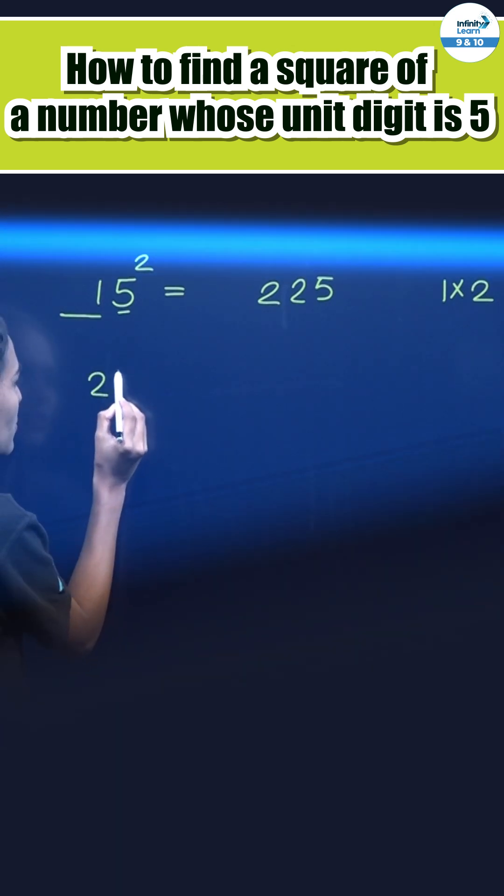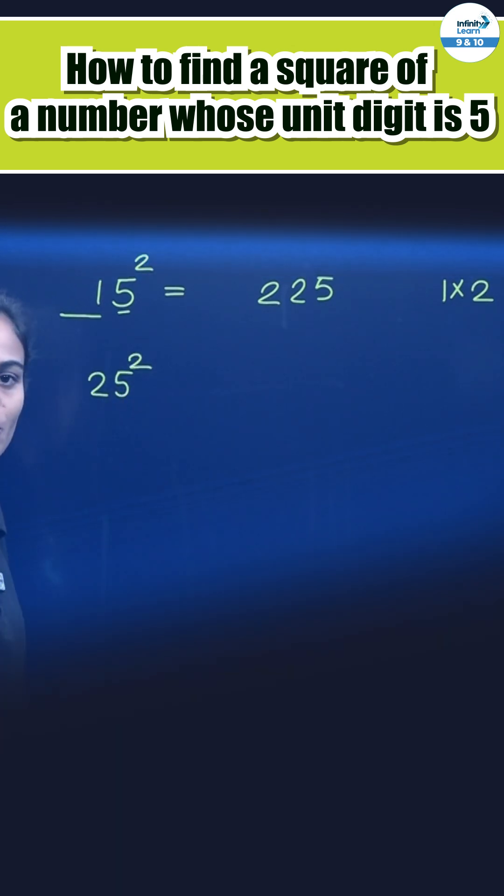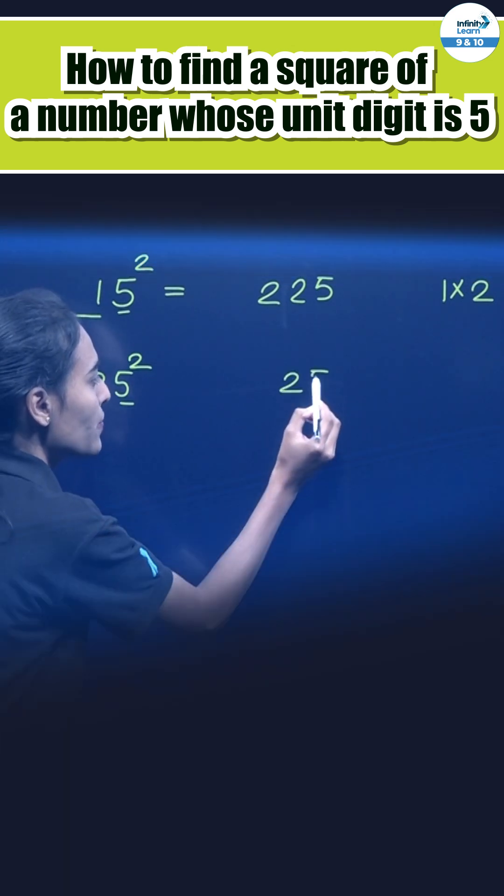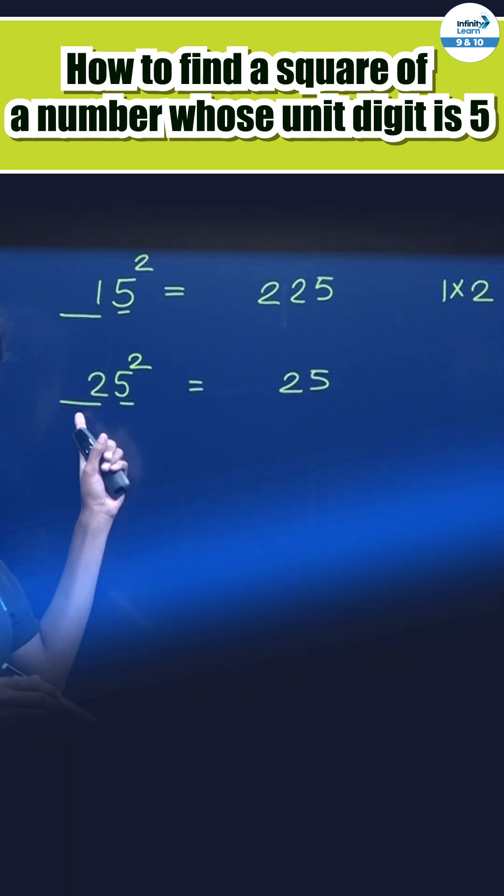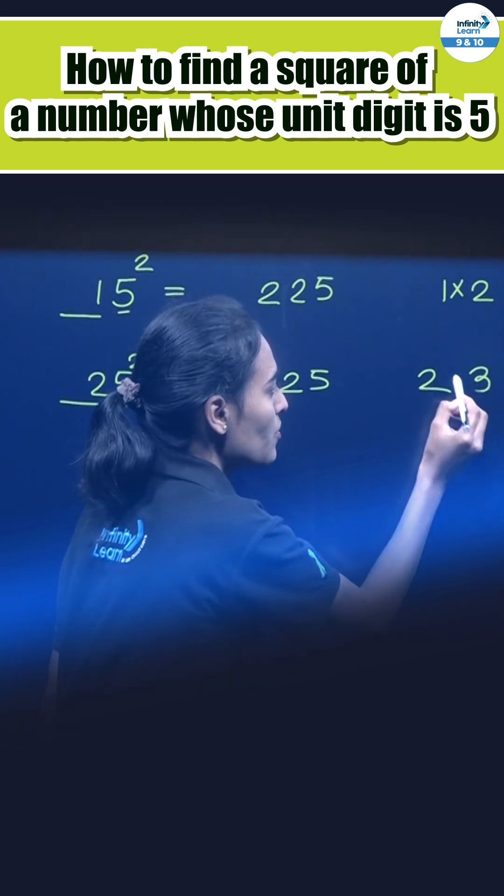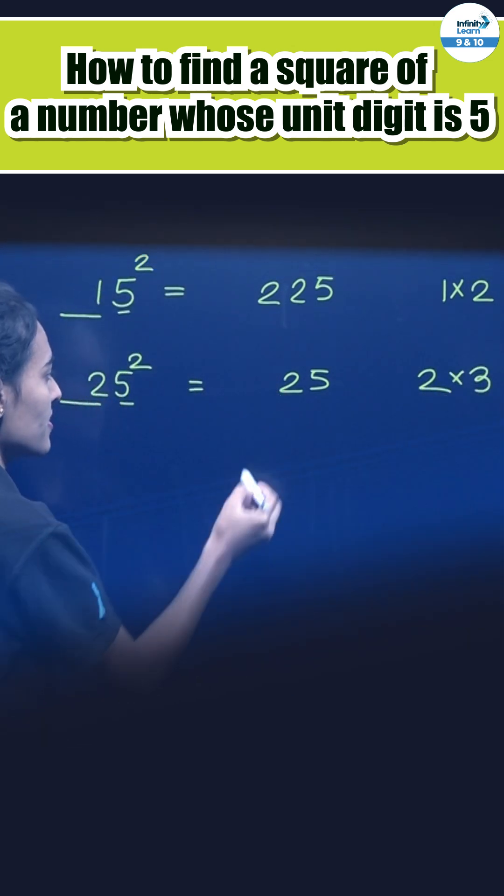Similarly student, find 25 square. First, group 5 as one group and remaining other digits as one group. First write 5 square, that is 25. And next take remaining number, that is 2. Add 1 in it, 2 plus 1, 3. Multiply, 2 into 3, 6, right here.